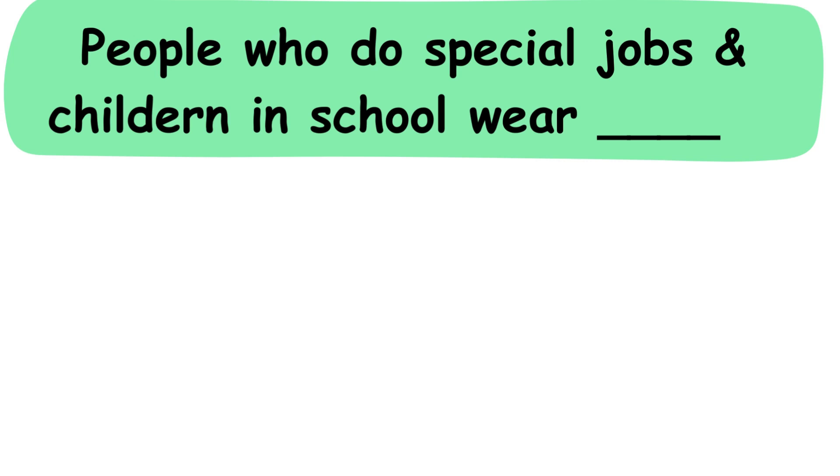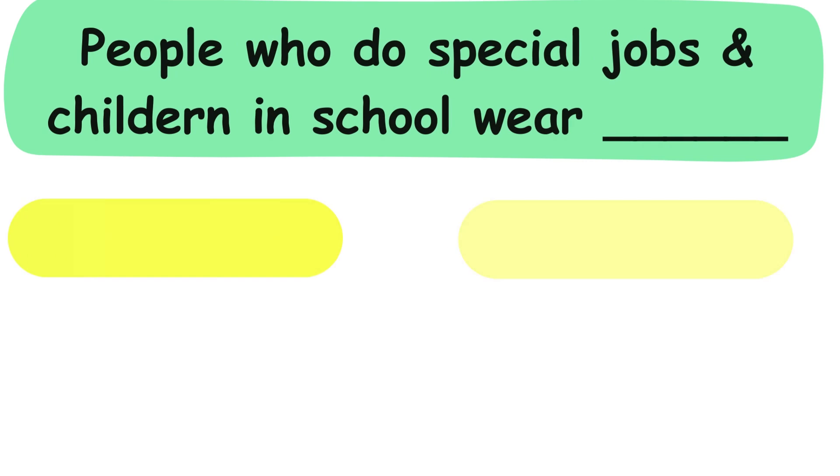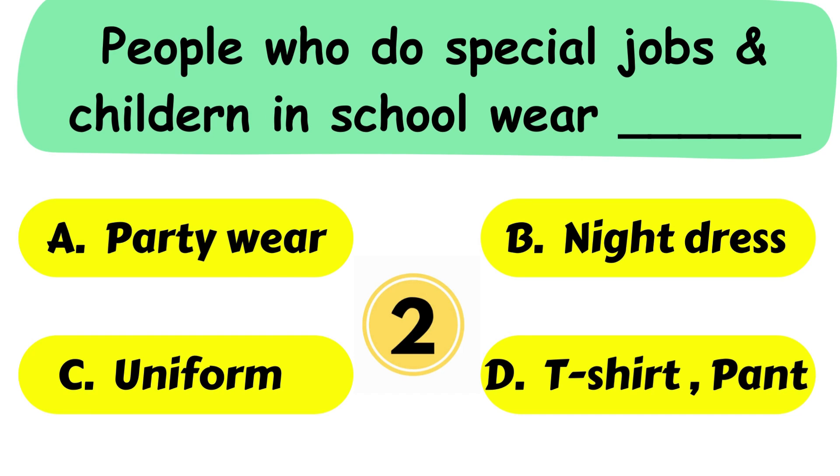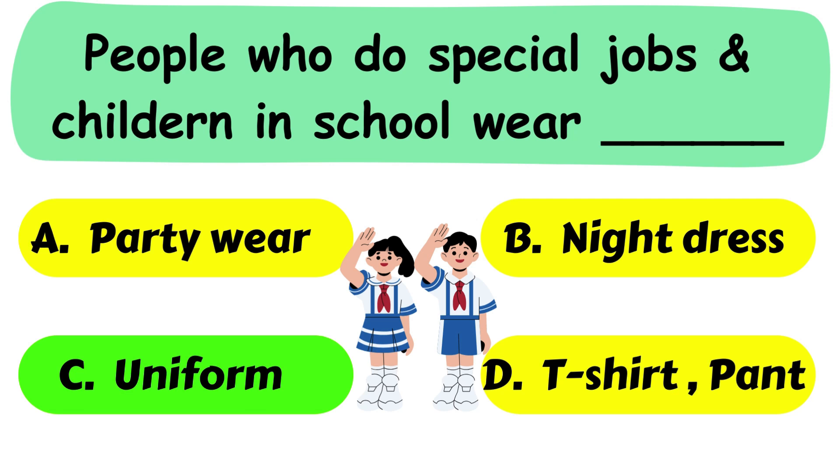Question No. 23. People who do special jobs and children in school wear dash. A. Party wear. B. Night dress. C. Uniform or D. T-shirt pant. The correct answer is option C. Uniform.